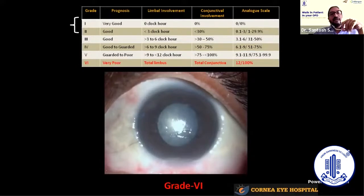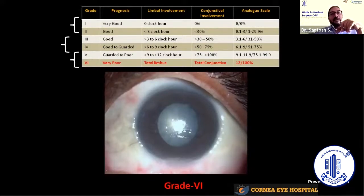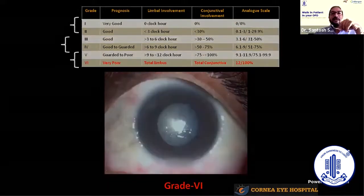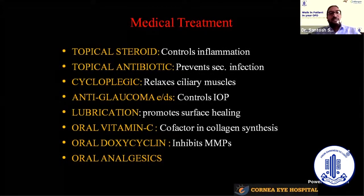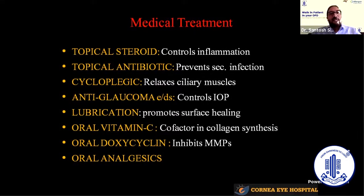In Grade 1 and 2, the visual prognosis is very good and we can confidently tell the patient they may not need any further surgeries for visual rehabilitation. In Grade 3 and 4, we can counsel the patient that they may need visual-restoring surgeries like SLET in the future. In Grade 5 and 6, patients may need multiple surgeries, and despite these, the visual gain may not be very satisfactory.